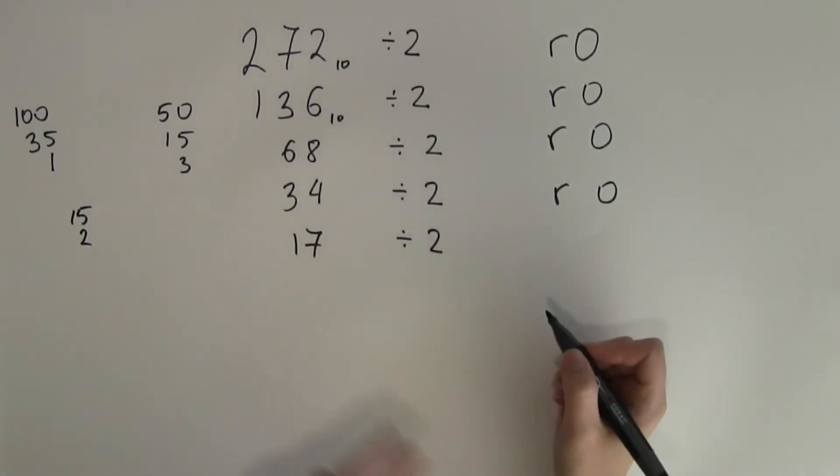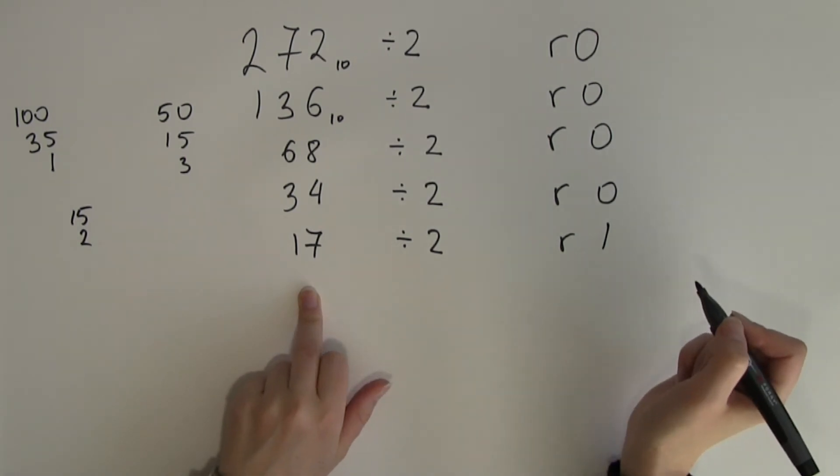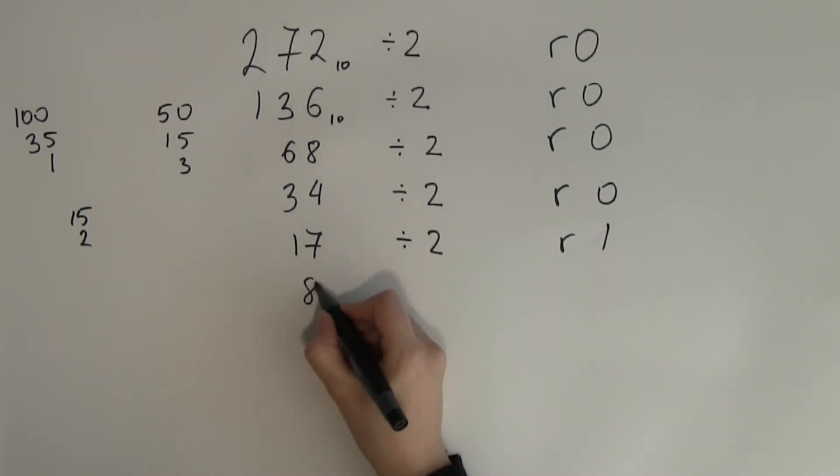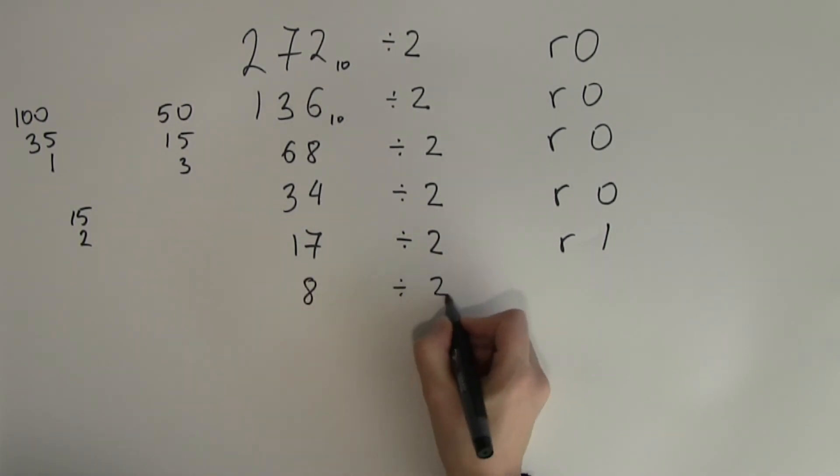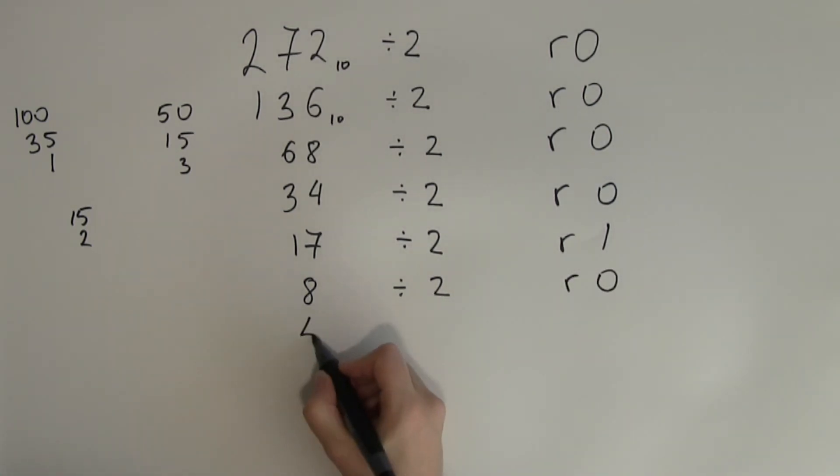17 divided by 2. That's an odd number. So my remainder will be 1. And if I take that remainder away from the number I will be left with 16. And half of 16 is 8. So 8 divided by 2. Again the remainder will be 0 because it's an even number. Half of that is 4.